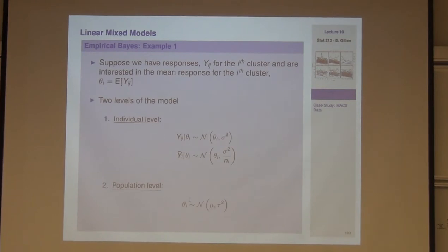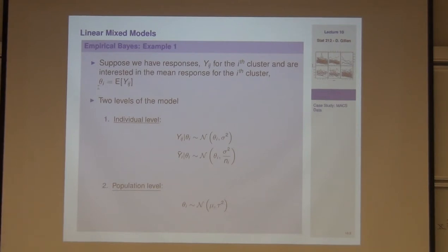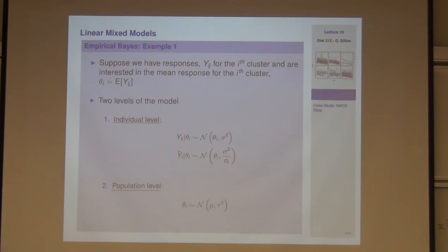Let's go through a simplified example to build intuition. Consider a random intercepts model where y-IJ has its own individual mean. At the individual level: given theta-I, the J-th observation on the I-th cluster is normally distributed centered at theta-I with measurement error variance sigma-squared. The mean of all observations for the I-th subject has variance sigma-squared divided by N-I, so more measurements gives more certainty about that individual.